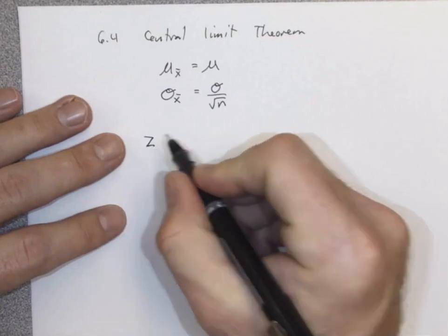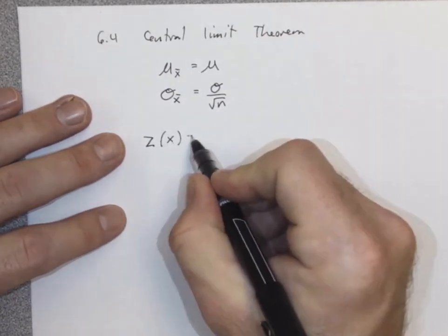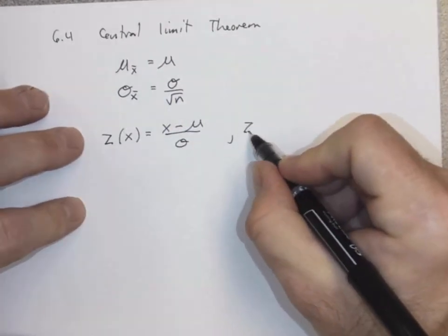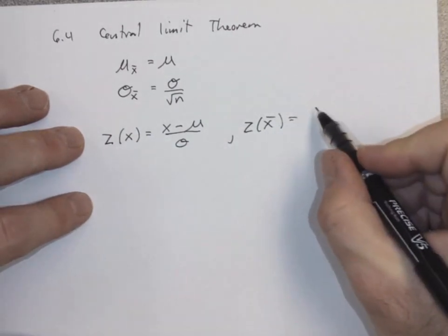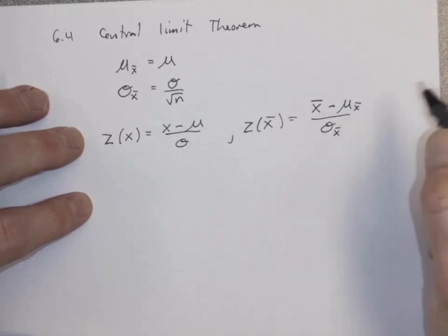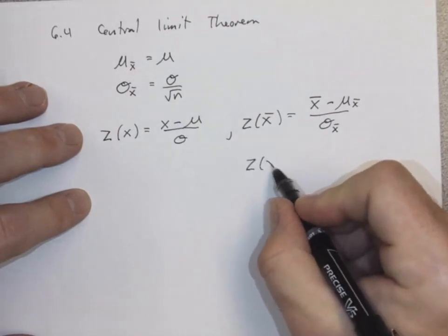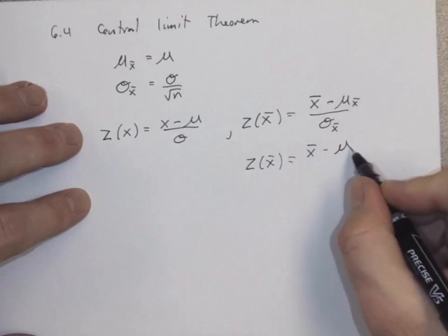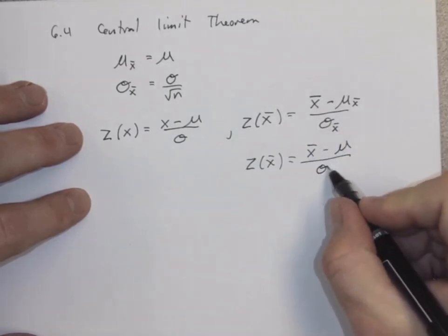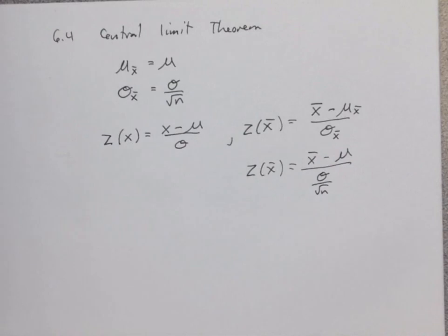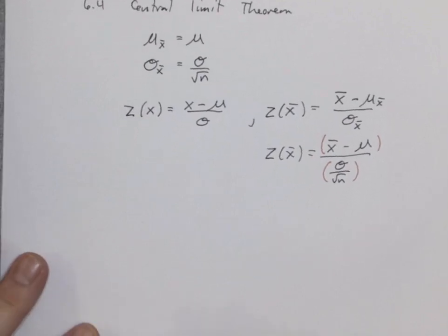This allows us to find Z-scores. The Z-score for an individual x is x minus mu over sigma. But the Z-score for x-bar — the mean — is that x-bar value minus the mean of the sample means, divided by the standard deviation of the sample means, which is sigma divided by the square root of n. Be careful to force parentheses when calculating on your calculator.